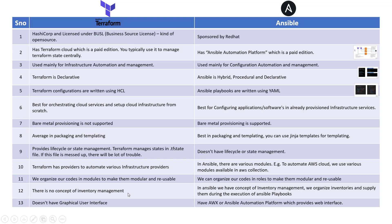In Terraform there is no concept of inventory management — you do not need a list of servers with connection details because Terraform creates those servers from scratch. With Ansible, you must provide an inventory file including how to connect to the host, the username, and the private key. Finally, Terraform has no graphical user interface and is managed entirely via CLI. Ansible in the open source edition has AWX, which provides graphical management, though you still write playbooks using a CLI or Visual Studio Code.